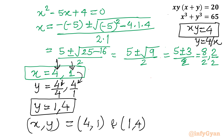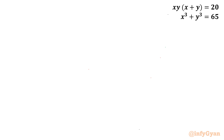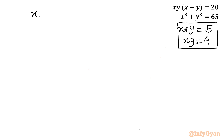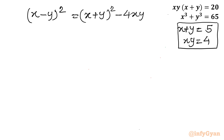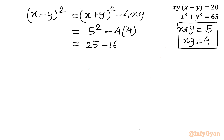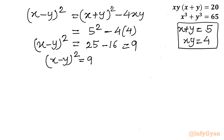Now for approach number 2, using algebraic identities. Our system is x + y = 5 and xy = 4. We use the identity (x − y)² = (x + y)² − 4xy. Substituting: (x − y)² = 5² − 4·4 = 25 − 16 = 9. Taking the square root of both sides gives x − y = ±3.